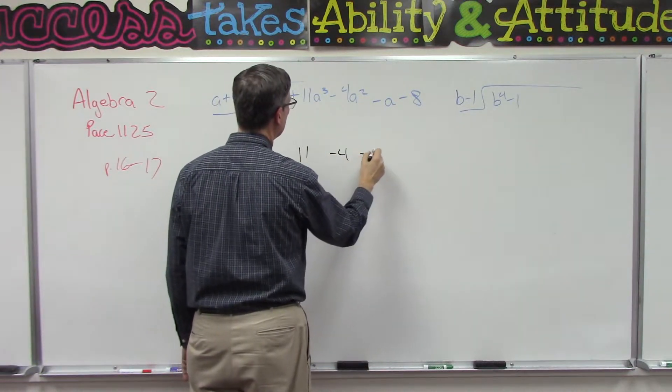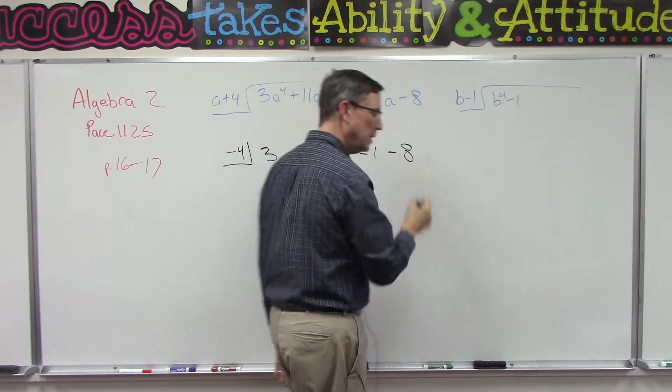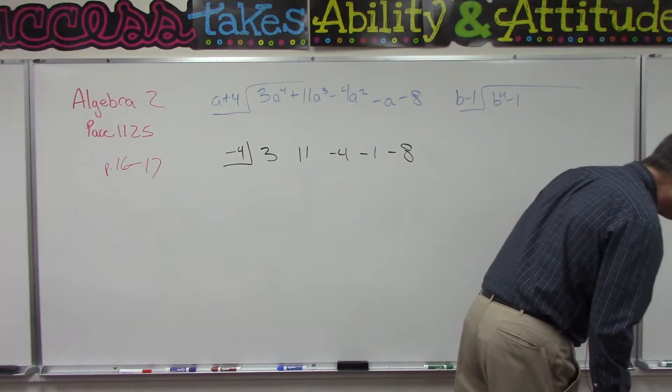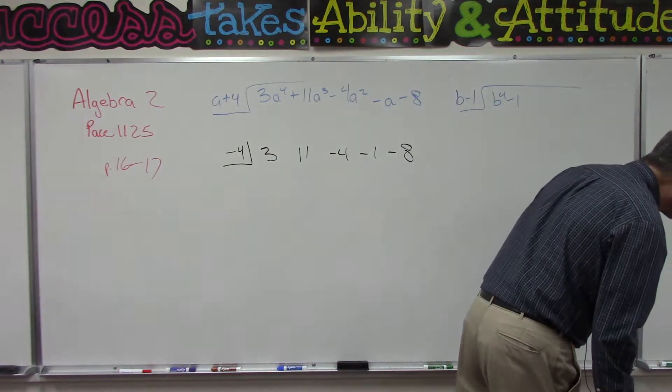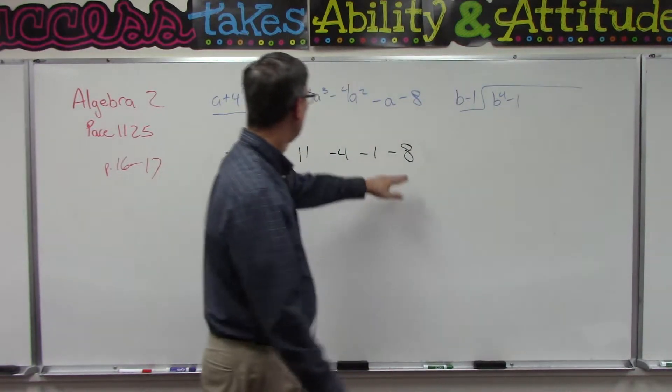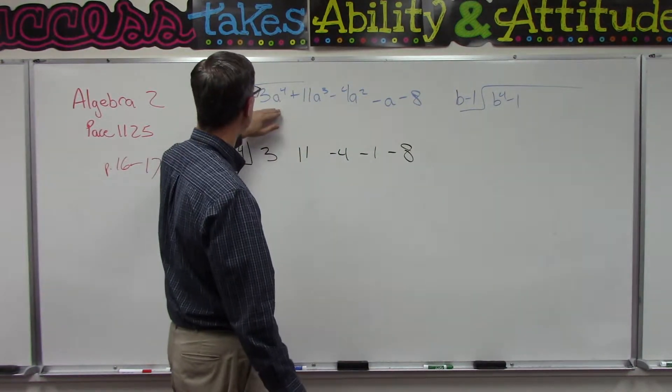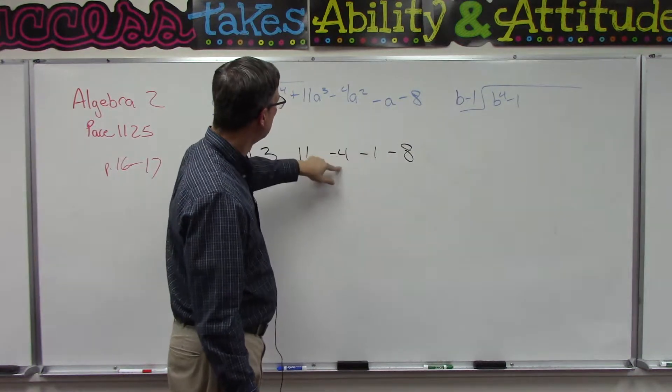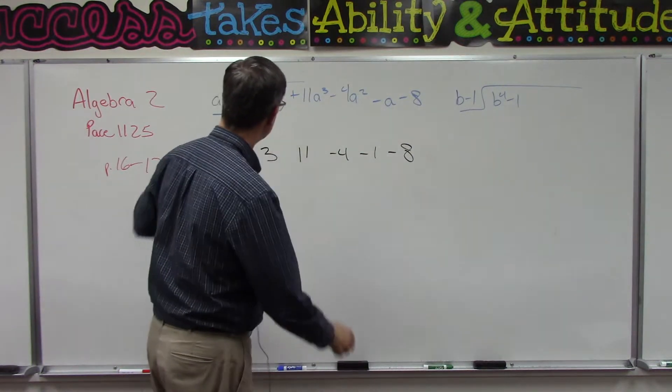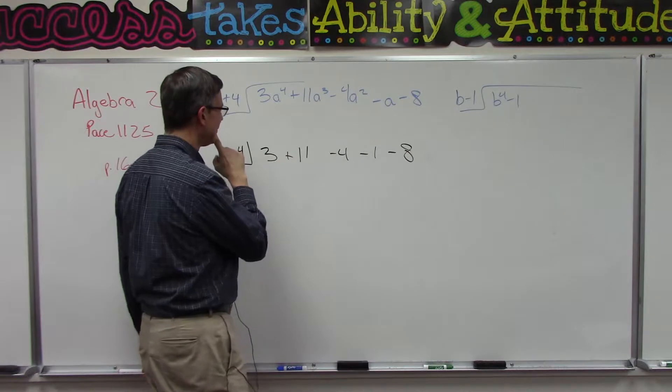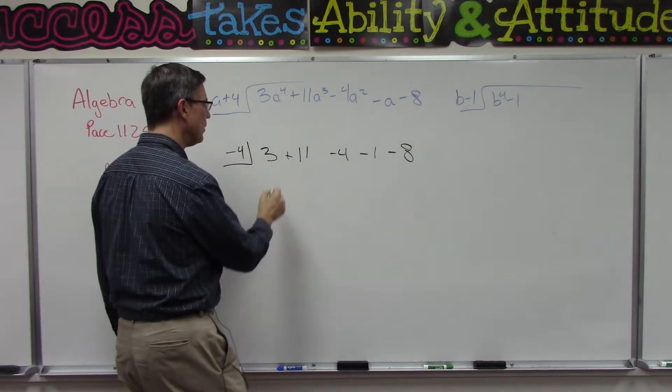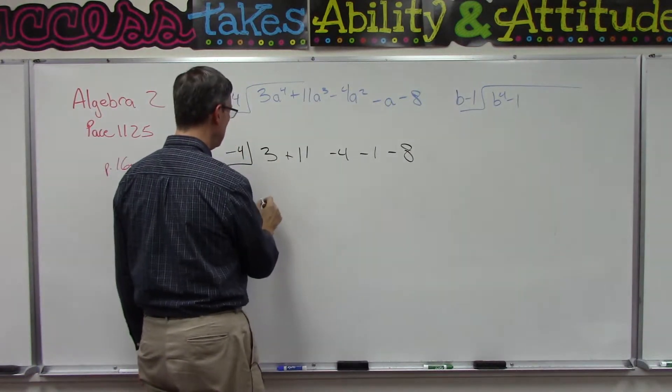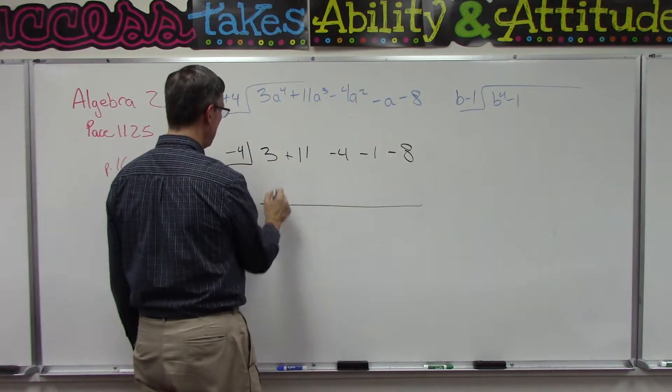In row one we leave all of these exactly as they were up here, so we're just taking the coefficient off of each of these terms. Then we're going to skip row two, come down here to row three, and bring the 3 straight down.